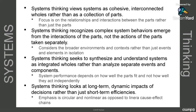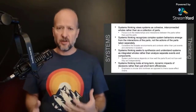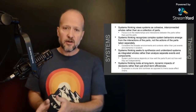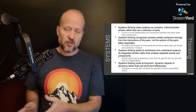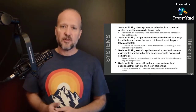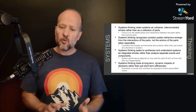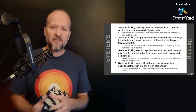Finally, for our summary of systems thinking: systems thinking looks at long-term dynamic impacts of decisions rather than just short-term efficiencies or benefits. The key thing here is to consider that thinking is circular and nonlinear, instead of thinking of it as linear cause-effect change. We often think if this happens, then this happens, and then that causes this to happen — but we don't often think of the feedback. With systems thinking, we think about feedback loops.